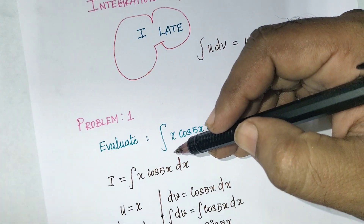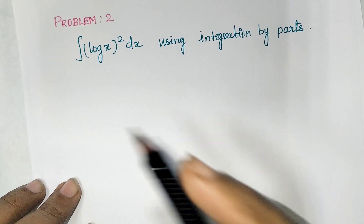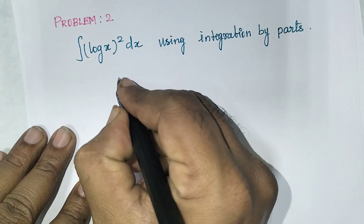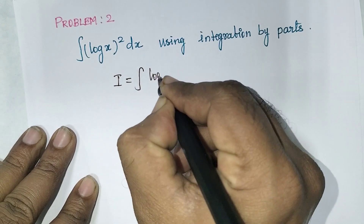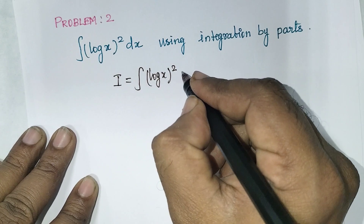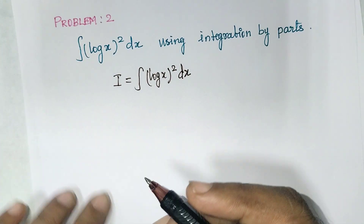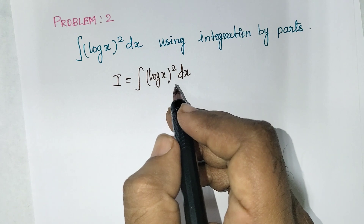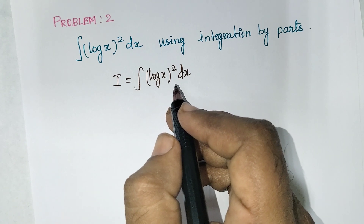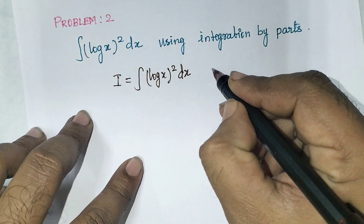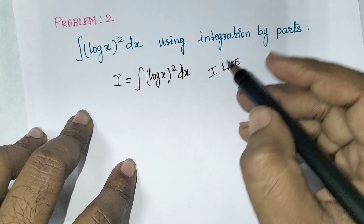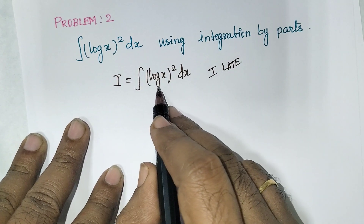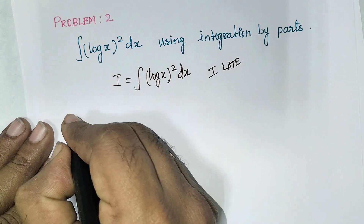Problem two: integral of (log x)²·dx using integration by parts. Let I equal to integral of (log x)²·dx. We apply ILATE — no inverse term, but there is a logarithmic term. So we fix u equal to (log x)².